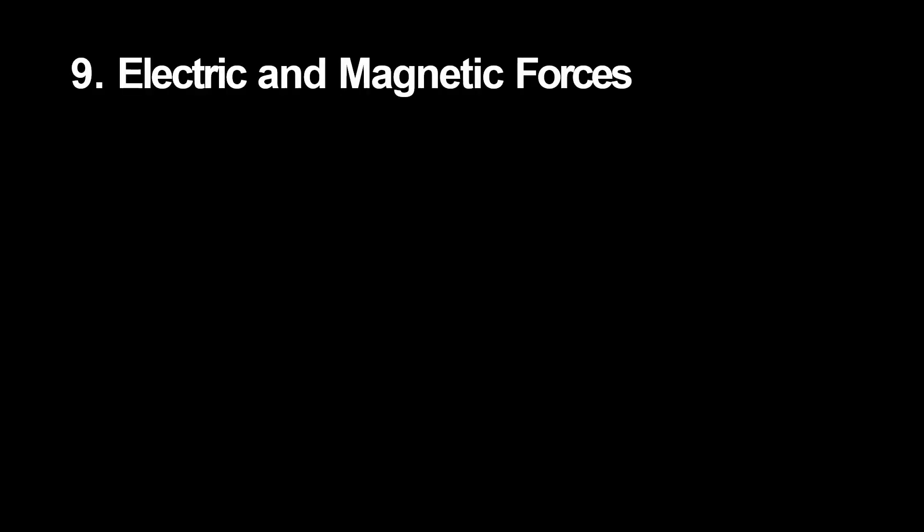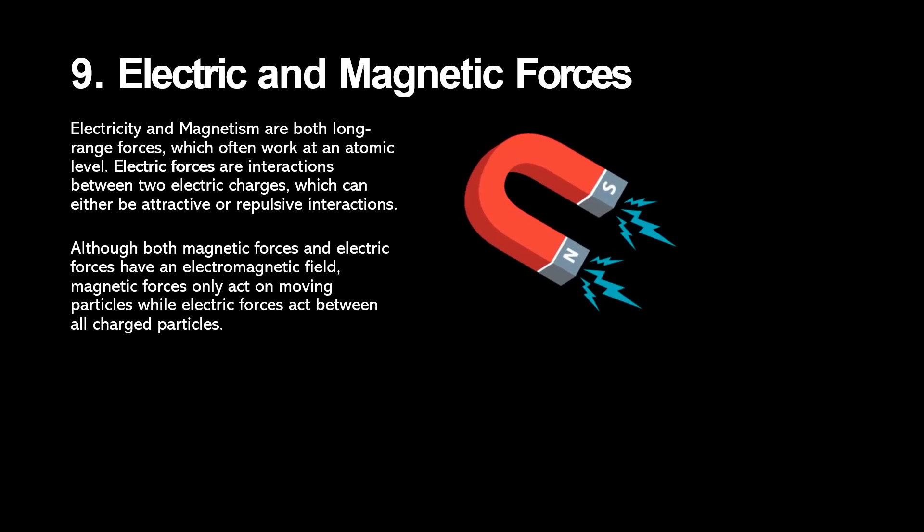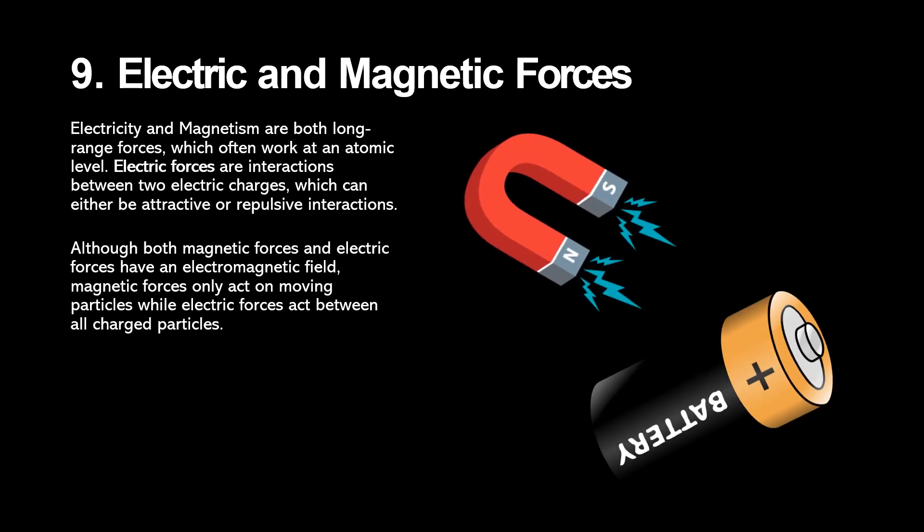Magnetic forces are both long-range forces, which work on an atomic level. The difference is that electric forces are interactions between two electric charges, which can either be attractive or repulsive to each other. Magnetic forces, on the other hand, only act on moving charged particles, while electric forces can act on all charged particles.